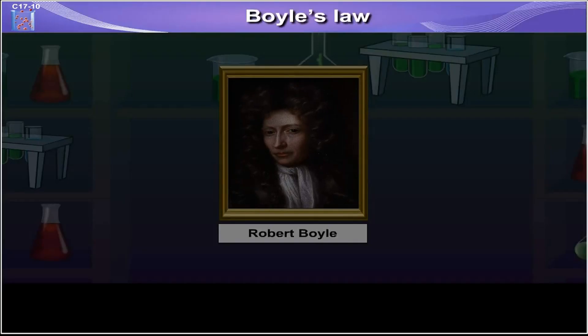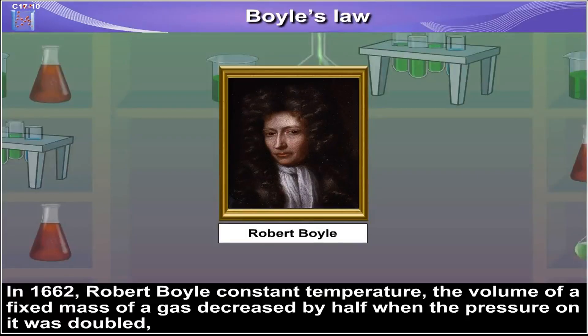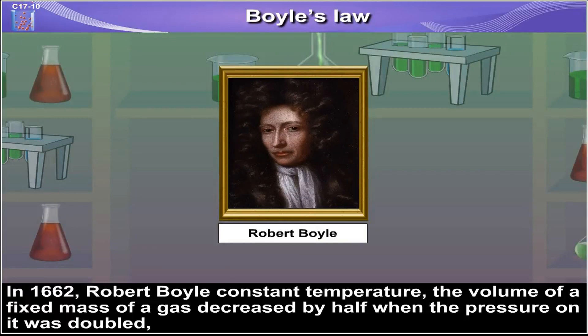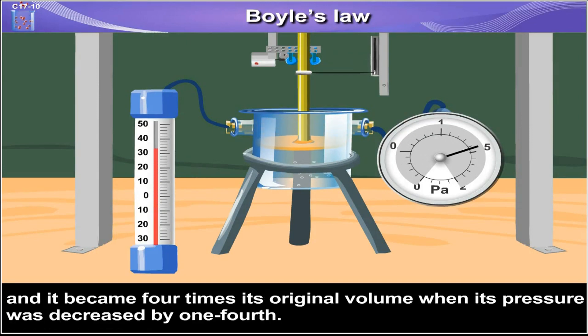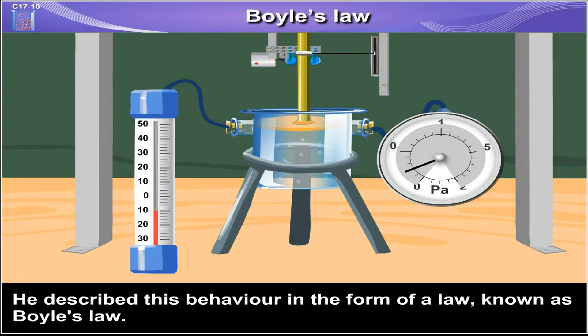Boyle's Law. In the year 1662, Robert Boyle stated that at constant temperature, the volume of a fixed mass of a gas decreased by half when the pressure on it was doubled, and it became four times its original volume when its pressure was decreased by one-fourth. He described this behavior in the form of a law known as Boyle's Law.